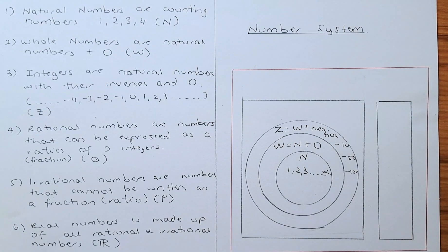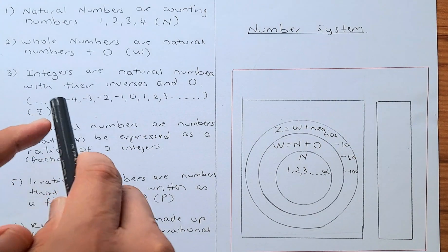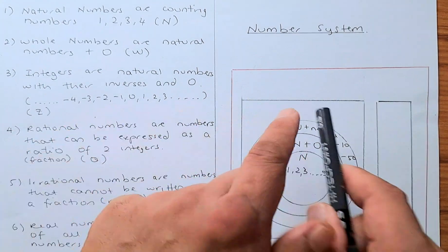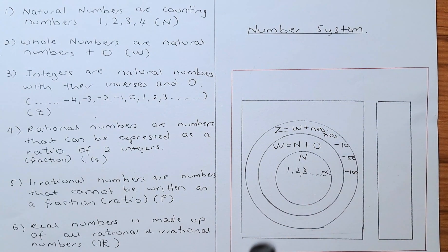So integers are just numbers like a big negative number, minus 4, minus 3, minus 2, minus 1, plus all the whole numbers that you have done before. So all whole numbers are also integers.